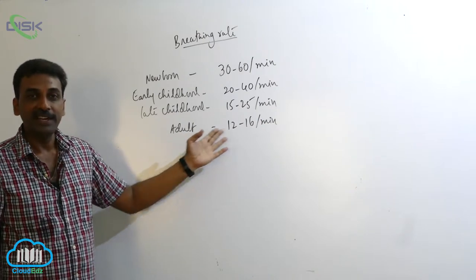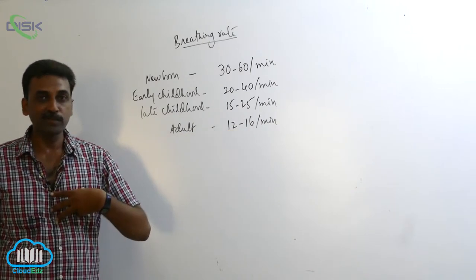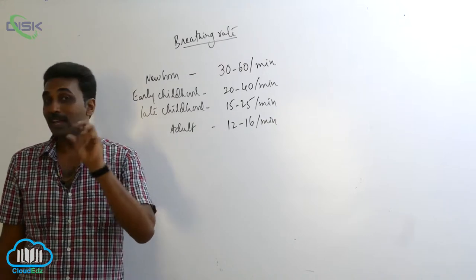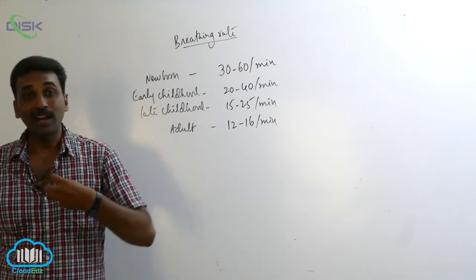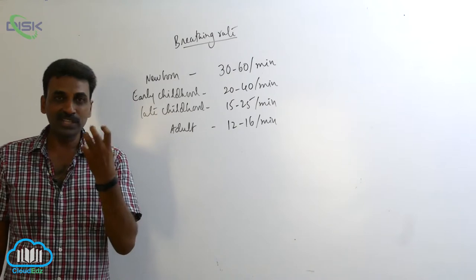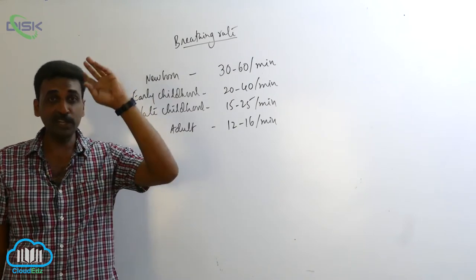But in adults, it is only 12 to 16 times per minute. We must not confuse breathing times with heartbeats. Heartbeat is contraction, systole, diastole - that is different, 70 to 80 times per minute.